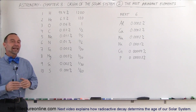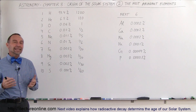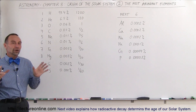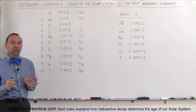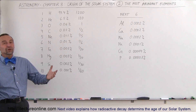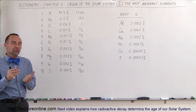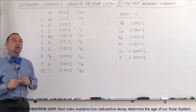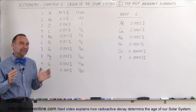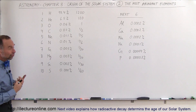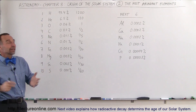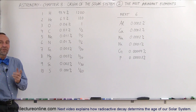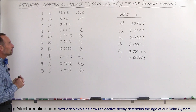Welcome to Electronline. Let's talk about the abundance of the elements in the universe, concentrating on our galaxy first, because the rest of the universe is so far away it's hard to confirm consistency. But at least in our galaxy, and of course our solar system is part of our galaxy, we have a pretty good idea of the relative abundance of the elements.